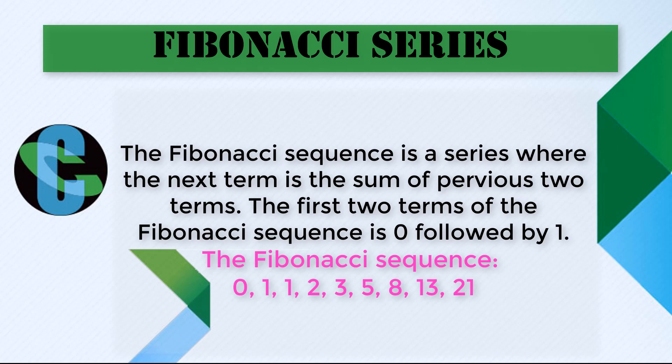So here you can see what is the Fibonacci series. The Fibonacci sequence is a series where the next term is the sum of the previous two terms. The first two terms of the Fibonacci sequence are 0 followed by 1. So the first term is fixed to 0 and 1, and every next term is the sum of the previous two terms. This is the Fibonacci sequence, and the very important part is the coding of this. So let's see what is the coding.